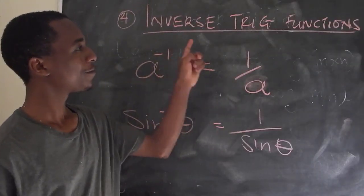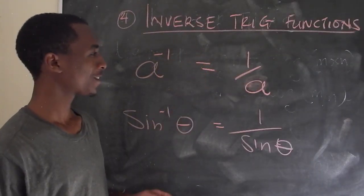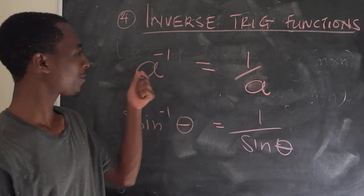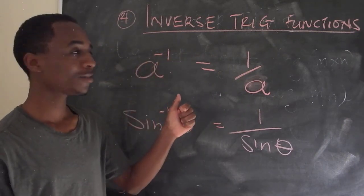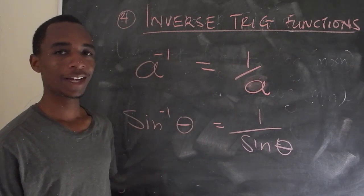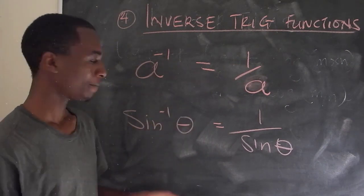Number four is about inverse trigonometric functions. Now, I'll begin with this. It's a known fact that a to the power negative one is essentially one over a. It's the inverse of a.